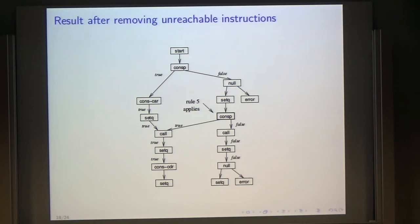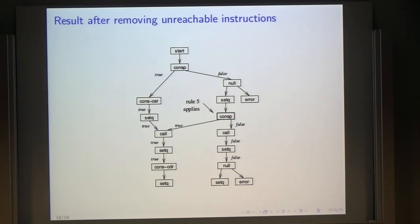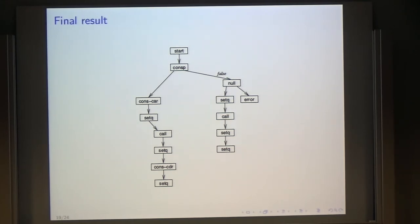Then we just continue doing this: rule five applies again to the cons-p, duplicating the seq, duplicating the null, et cetera. We continue doing that, and then we do the same thing for the other test, which is null. Just continue applying these rules.